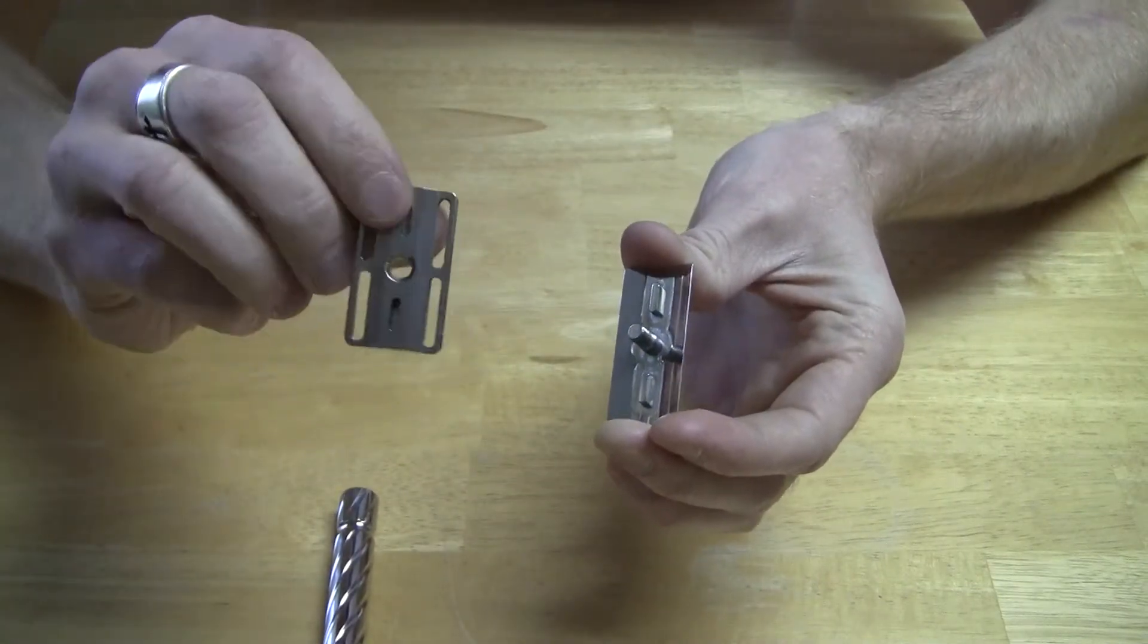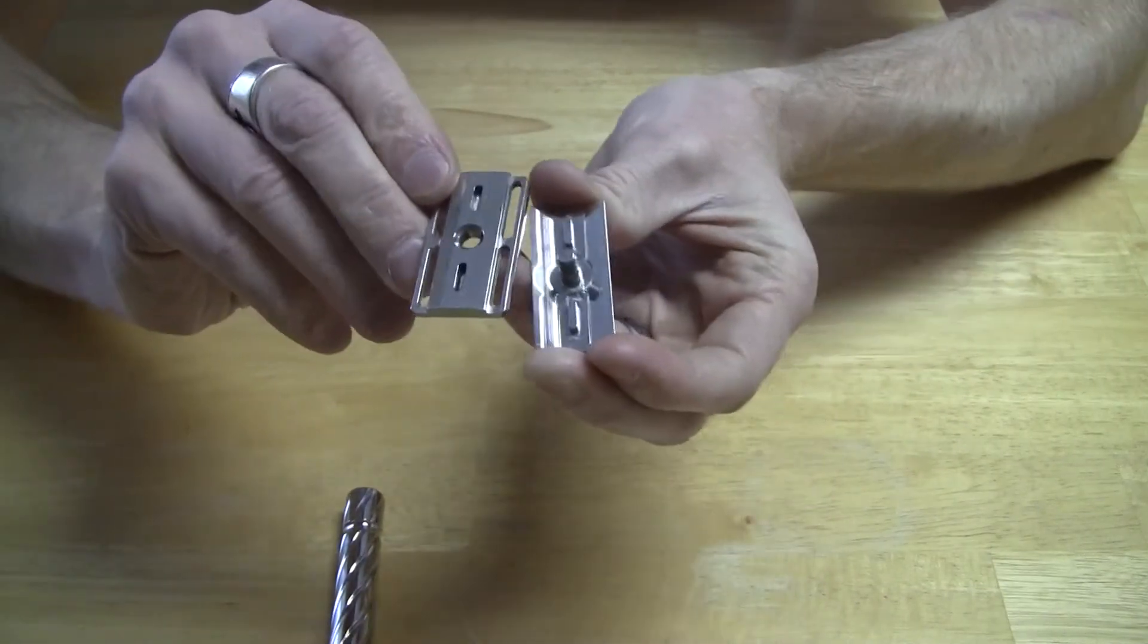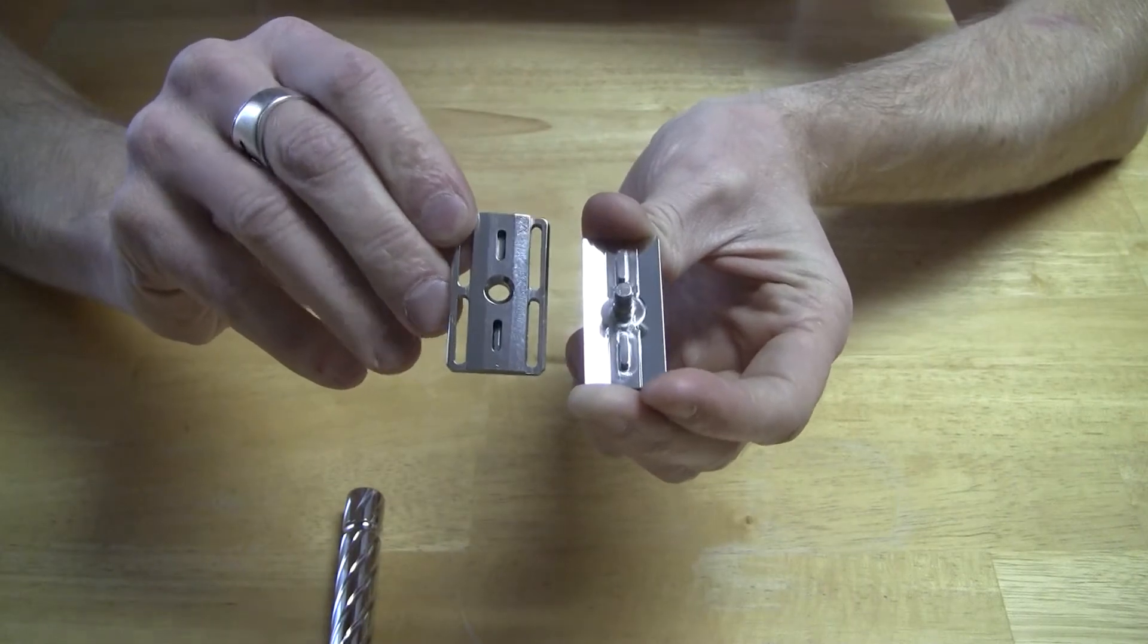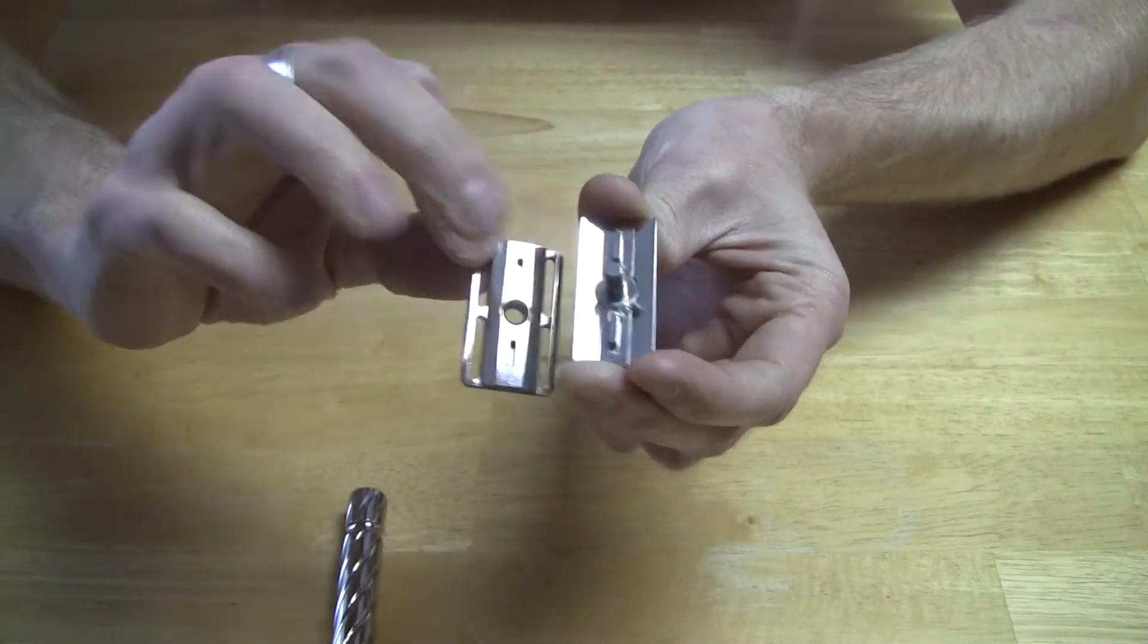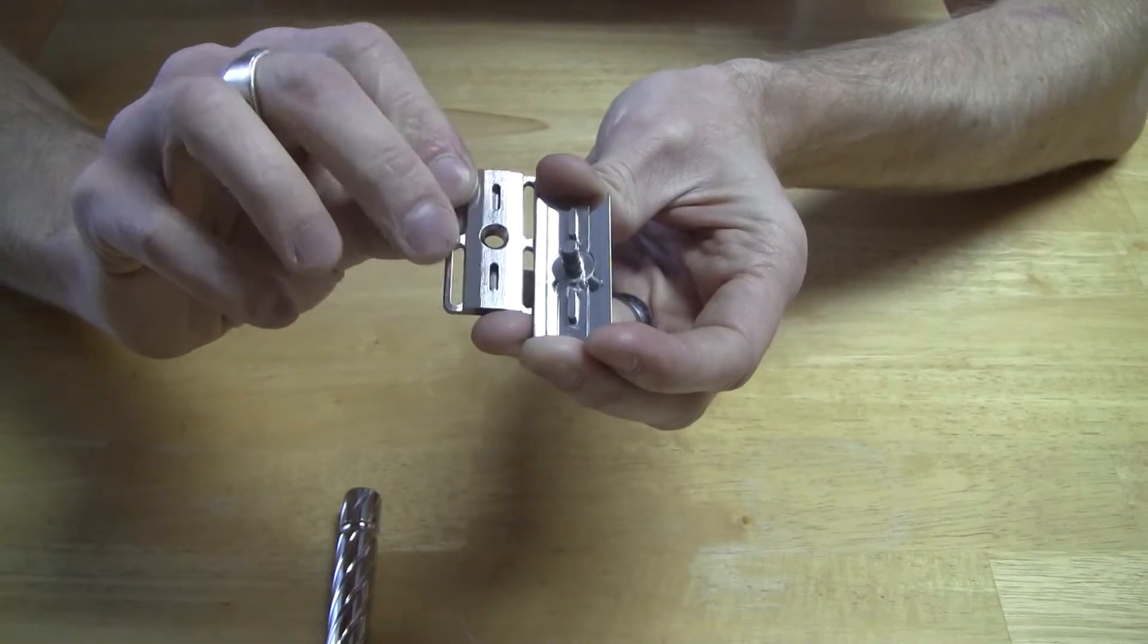Two-piece head here. We have a base plate and we have the cap. You can see that there's two protrusions here and then a center post and it fits together into those two slots.